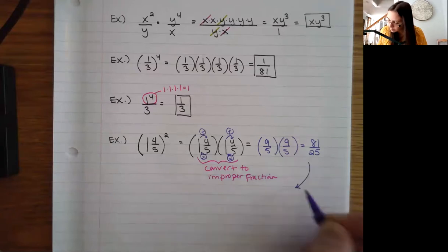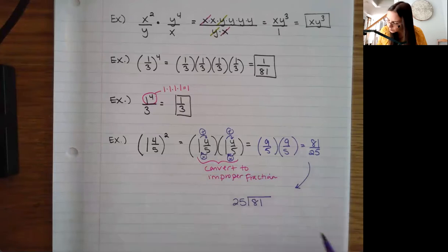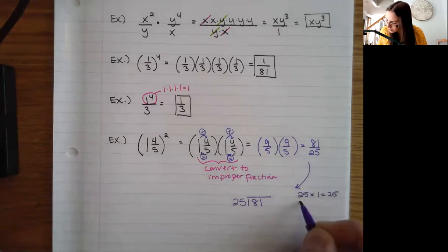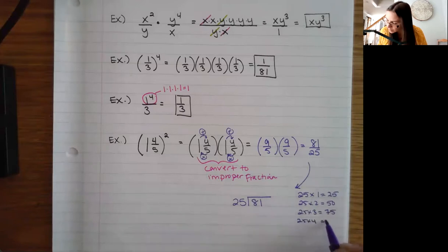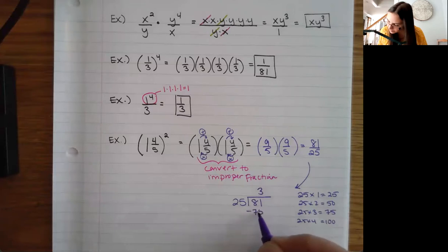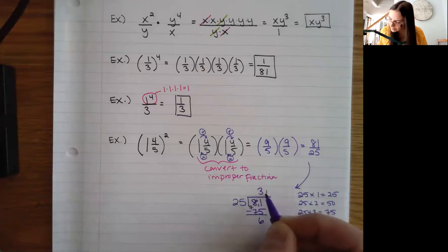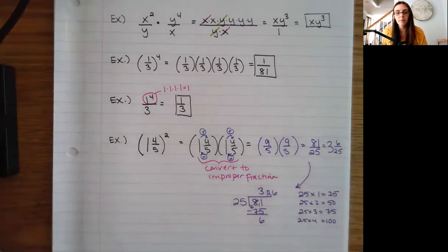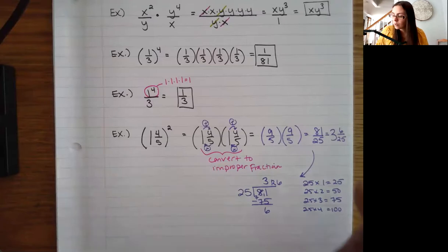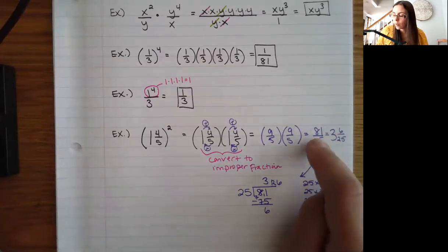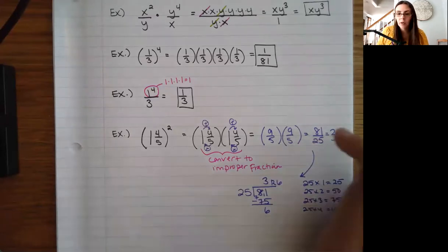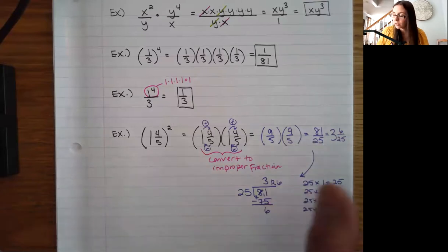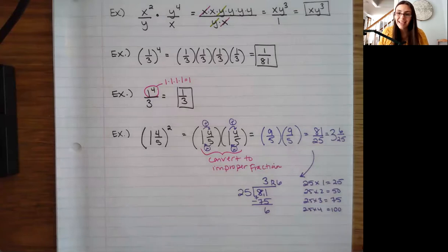If you need to convert 81/25 to a mixed number, we go through the division process. 25 goes in three times with a remainder of 6, so another way to write this is 3 and 6/25. A nice thing here: if you know one form is simplified, the other is also simplified. Because I know 81/25 is in lowest terms, I don't have to check 6/25 — it's also simplified.